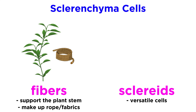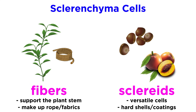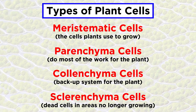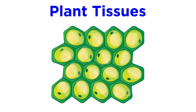The other group of sclerenchyma cells are the sclereids, and they're much more versatile. These scleroid cells are what make up the shells of nuts, the hard coatings of seeds like those found in peaches and plums, and many other hardened structures in a plant. So now we know about the four types of plant cells, those being meristematic, parenchyma, calenchyma, and sclerenchyma. But cells don't really function individually inside a plant — instead they clump together to form tissues with different jobs. This means that tissues are what we will investigate next.